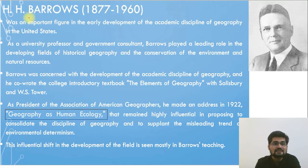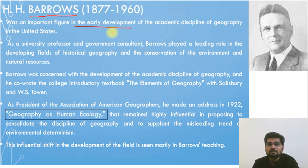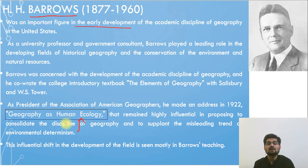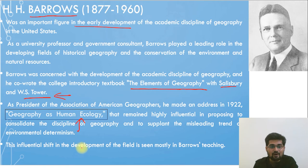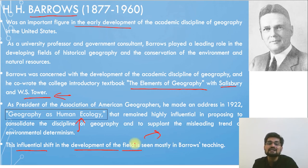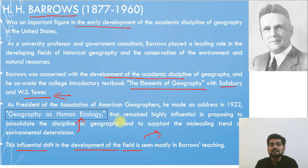Another important scholar is H.H. Barrows, an important figure in the early development of the academic discipline of geography. His concept of human ecology became increasingly famous, and his work, The Elements of Geography, co-authored with Salisbury and W.S. Tower, became famous in terms of human ecology concepts. He was one of the influential persons who led to a shift in the development of the field, viewing it mostly through an ecological lens.